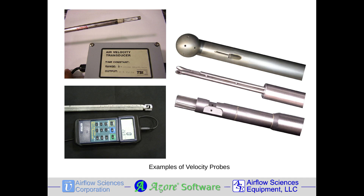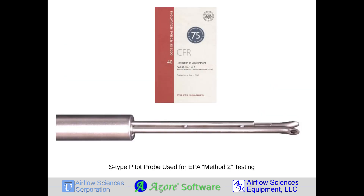This probe is most often used when measuring gas flow rates in the exhaust stream of industrial plants. These results are reported to the U.S. Environmental Protection Agency, the EPA, to accurately monitor pollution emissions from these plants. The EPA provides the test protocol, Method 2, which describes the proper use of the S-type pitot probe in the U.S. Code of Federal Regulations 40 CFR 60.